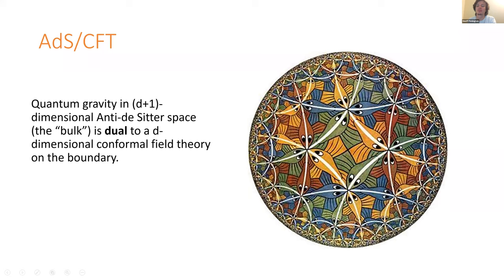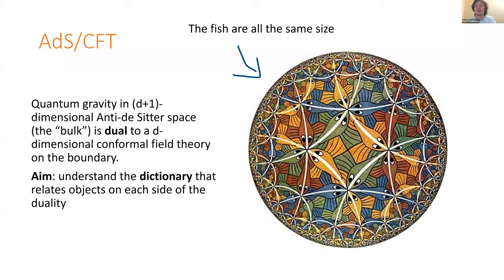Anti-de Sitter space is — the spatial slice of it is what's called hyperbolic space. All these features that seem to get very small out towards the boundary are actually all the same size — it's infinitely big. This is a duality, and one of the main aims in high energy physics is to understand the dictionary that relates objects on the two sides, thereby learning more about quantum gravity.